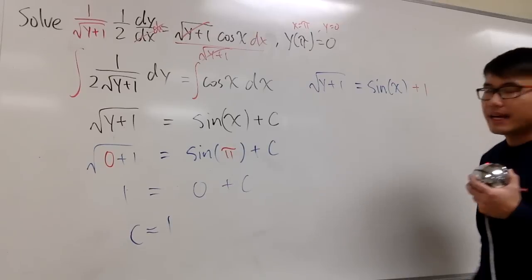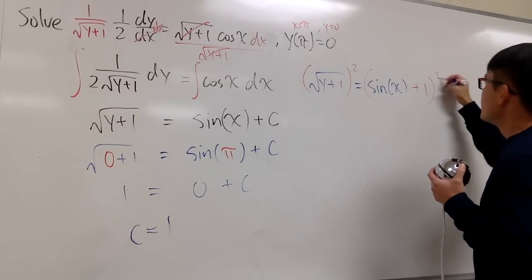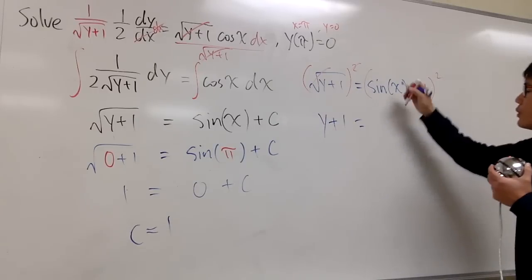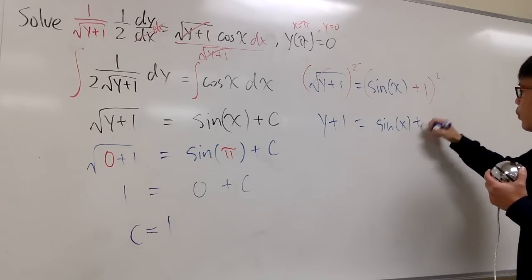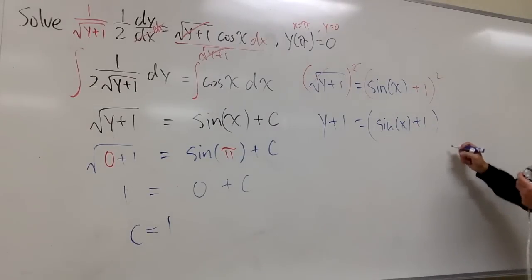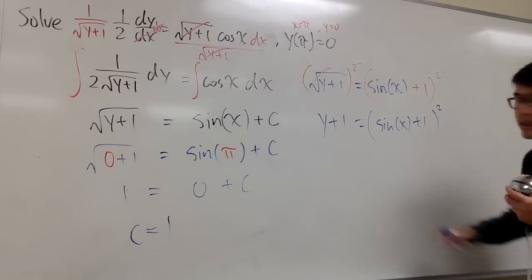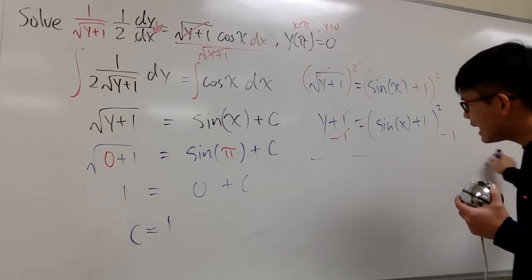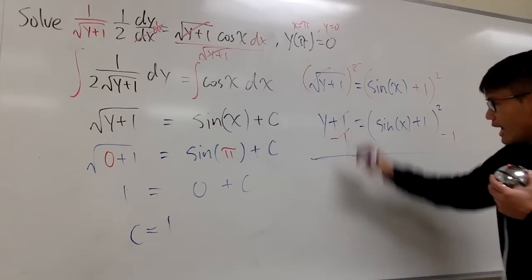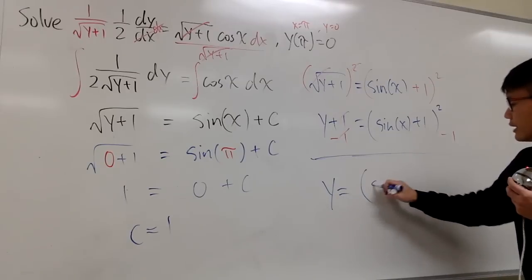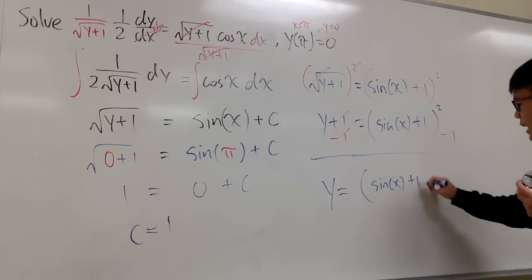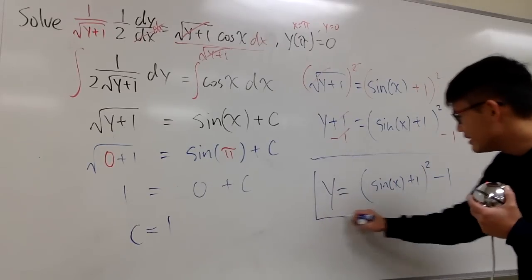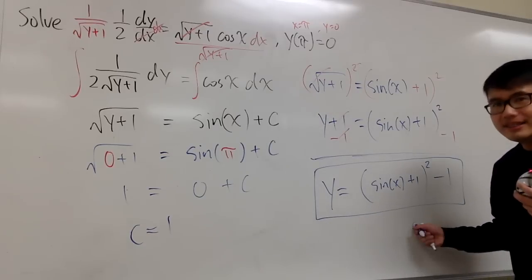We would like to isolate y. So let's go ahead, square both sides. They cancel, and we will have y plus 1 is equal to sine of x plus 1 inside of this big parentheses, and square that. And, of course, we have to just subtract 1 on both sides, and we see that y is equal to sine of x, and then plus 1, and then square that, and then minus 1.